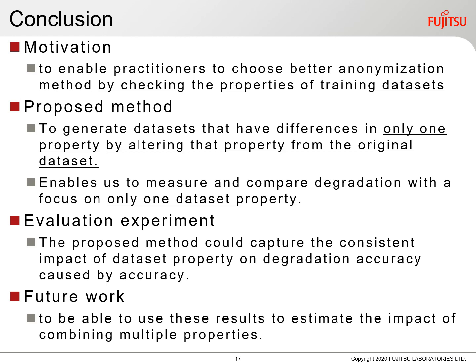To summarize today's presentation: in order to enable a practitioner to choose an effective anonymization method by checking the properties of training datasets, we proposed a method to generate datasets that have differences in only one property by altering that property from the original dataset. This enables us to measure and compare degradation with a focus on only one dataset property. Evaluation experiments show that the proposed method could capture the consistent impact of dataset properties, and we could determine better anonymization from dataset properties. In the future, we need to use this design to estimate the effect of combining multiple properties. Thank you for listening.